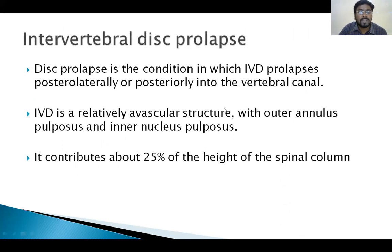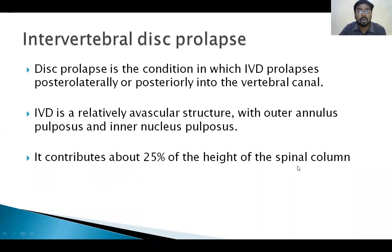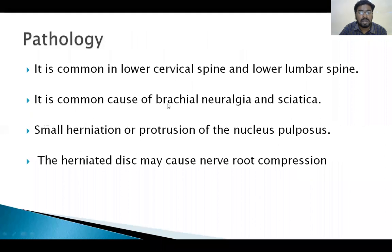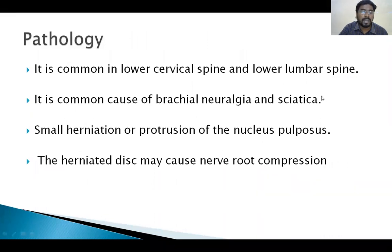Coming to intervertebral disc prolapse: the intervertebral disc contributes to 25% of the height of the vertebral column. It is common in the lower cervical and lower lumbar regions. When it occurs in the lower cervical region, it causes brachial neuralgia. When it occurs in the lower lumbar region, it causes sciatic type of pain. This prolapse may cause nerve root compression.